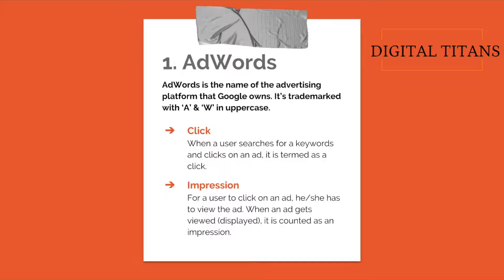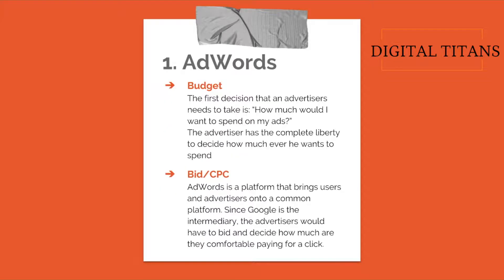An impression is counted when an ad is displayed on Google Search. A click is counted when the user clicks on that ad. Not everyone who sees the ad will click on it, so inevitably the number of impressions will always be more than the number of clicks. When a user searches on Google and an ad shows up, that is an impression; if they click on it, it is registered as a click in the AdWords system.